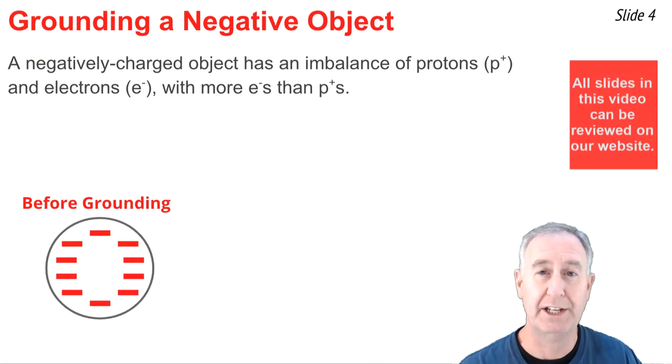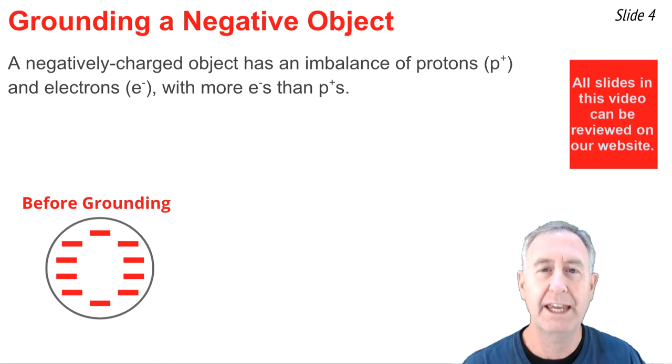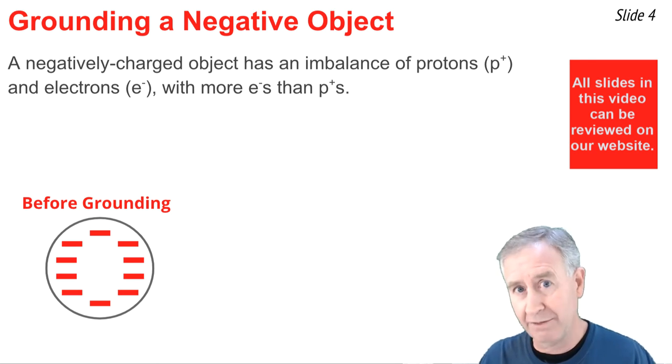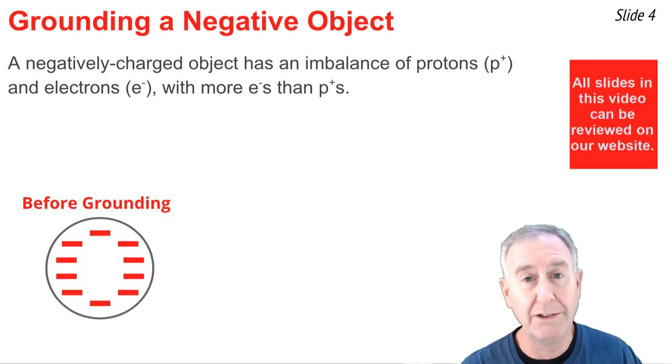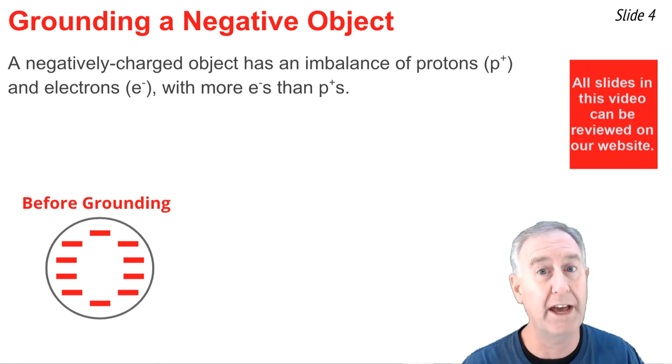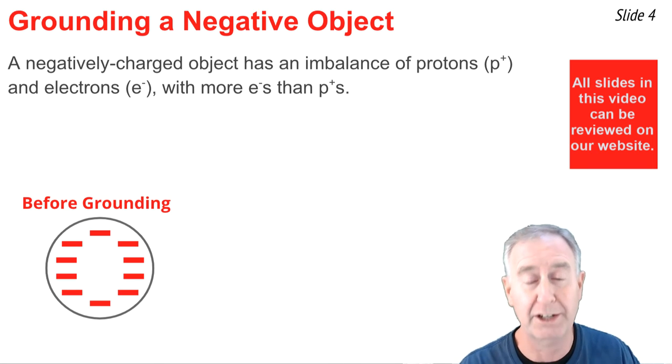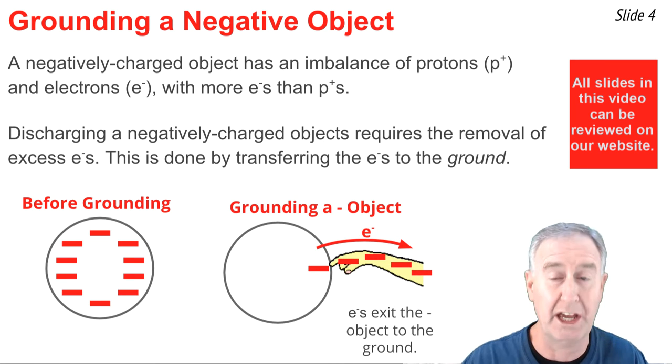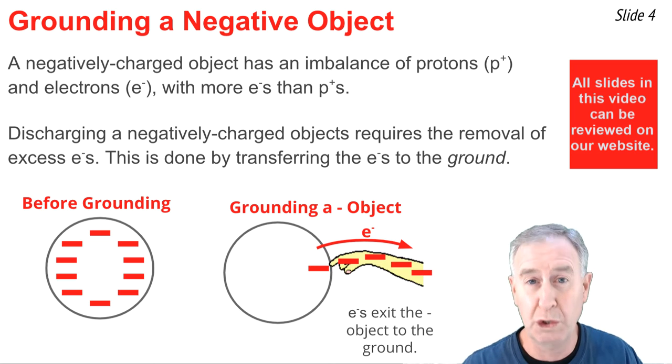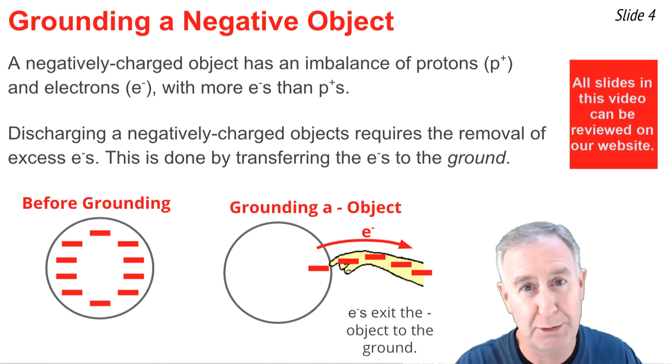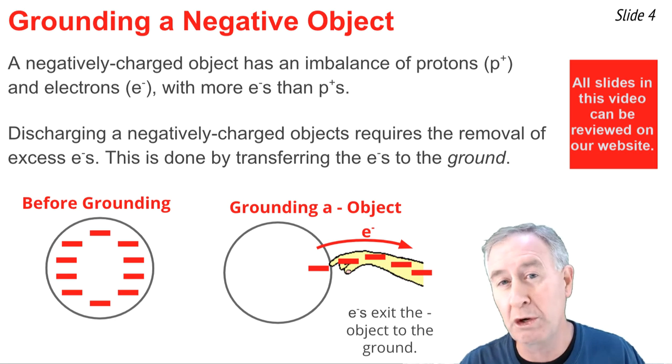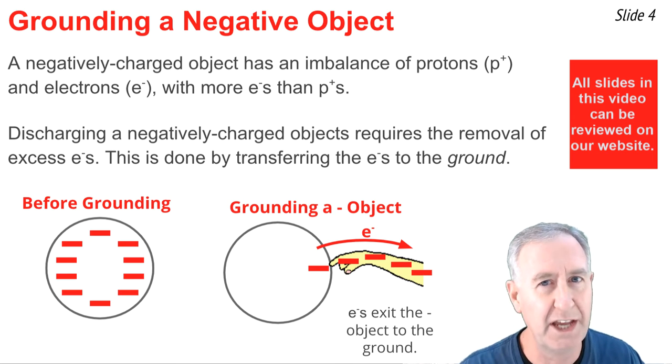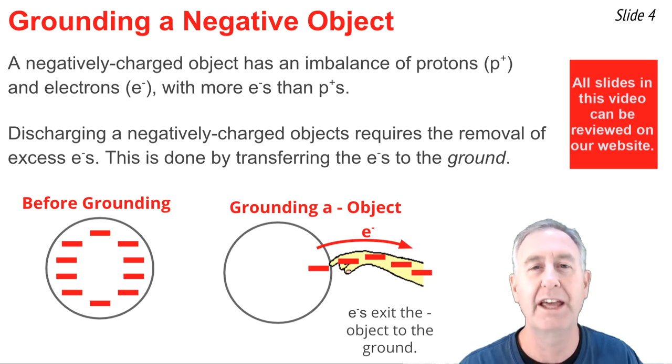A negatively charged object has an imbalance of protons and electrons with more electrons than protons. It has an excess of negative charge, as represented in the diagram. To ground such an object, you would have to remove that excess negative charge, and you do so by transferring electrons from that object to the ground. It's most commonly done in lab environments by touching the object with your finger. When you do touch the object, electrons move from that object that's negative into your body until it has lost all of its excess of electrons. At that point, it has a balance of charge.